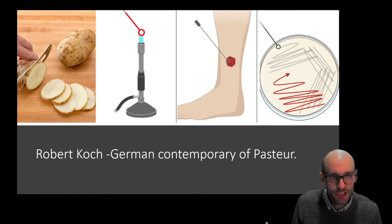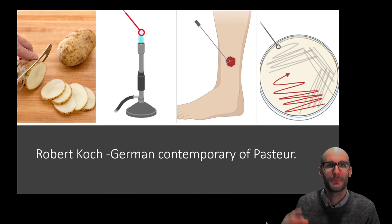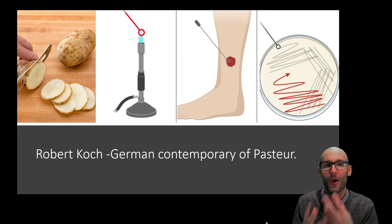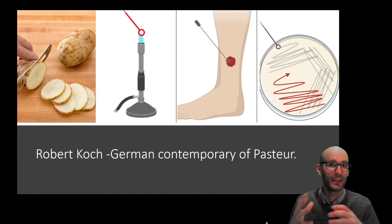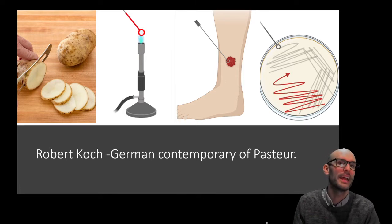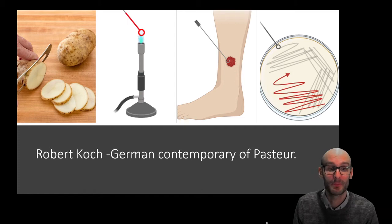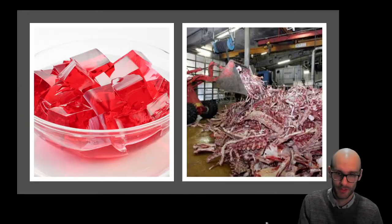But Koch was not happy with the potato. The potato broke down, it also grew its own bacteria — it wasn't sterile. It wasn't ideal: a film of liquid would form upon it and molds would often grow. So he wasn't happy with the potato slice and he wanted to improve it.